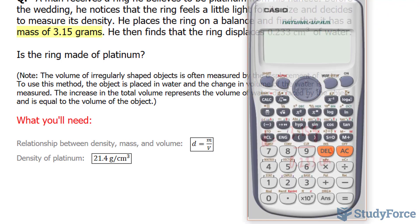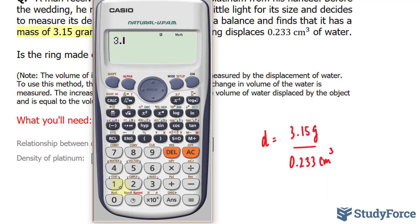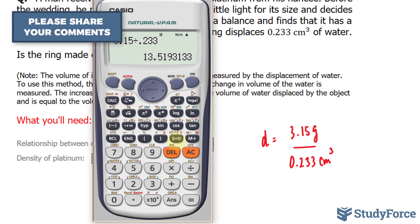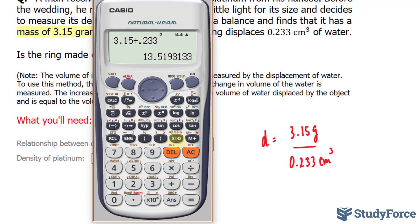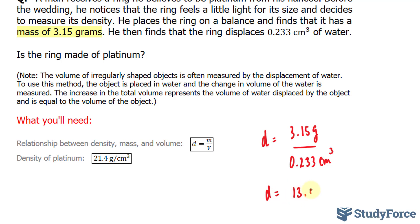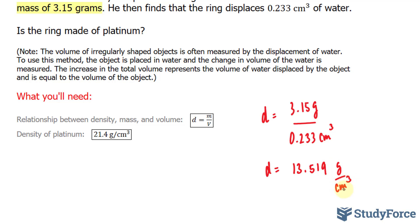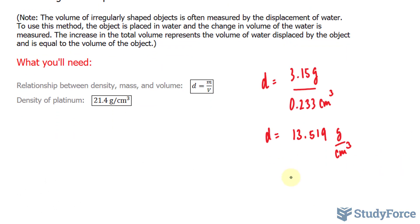Let's go ahead and find out what density is equal to. We have 3.15 divided by 0.233. This gives us 13.519. I'll write down five numbers and then I'll take into account significant figures afterwards. Density is equal to the following grams per centimeters cubed. Our final answer needs to have three significant figures, so we have to stop writing after the third number, giving us a final answer of 13.5 grams per centimeters cubed.